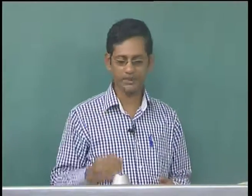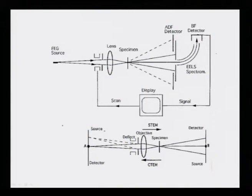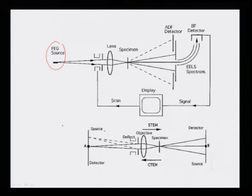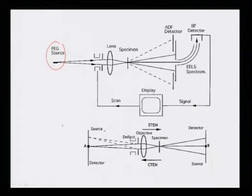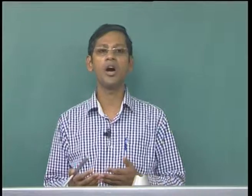In a scanning transmission electron microscope, we have a field emission gun (FEG) source of very high brightness and small energy spread. This FEG source is focused by the objective lens onto the specimen, demagnifying the electron beam into a convergent beam. When this convergent beam falls on the sample, it diffracts and gives diffraction discs from both transmitted and diffracted electron beams.